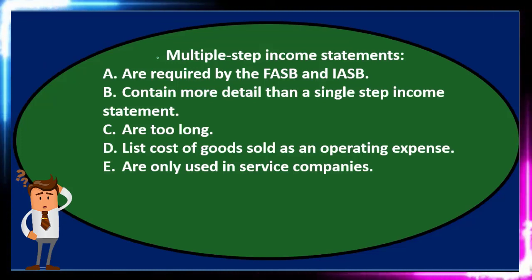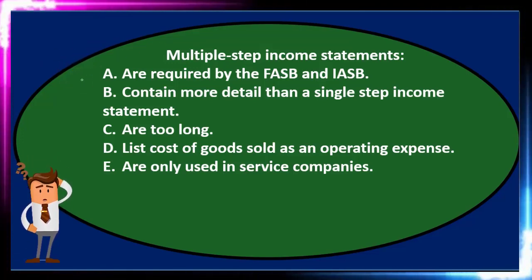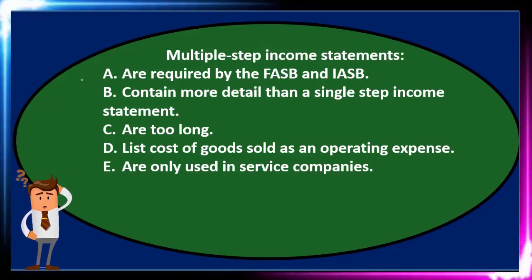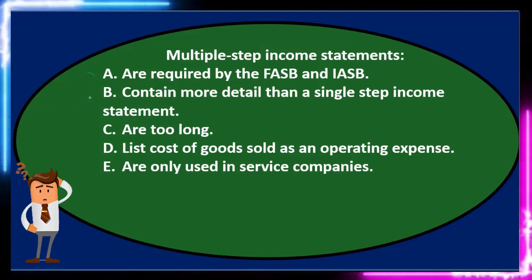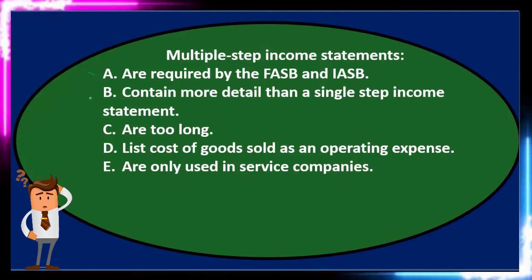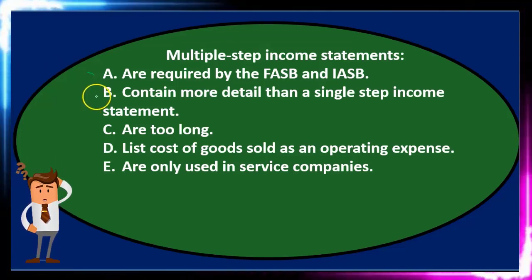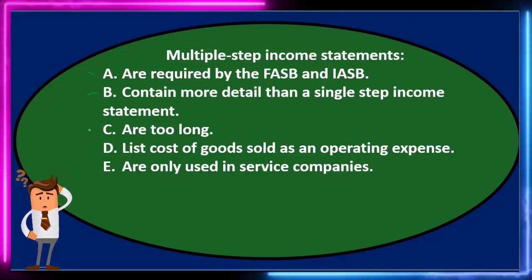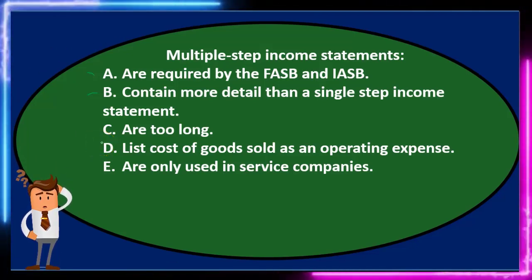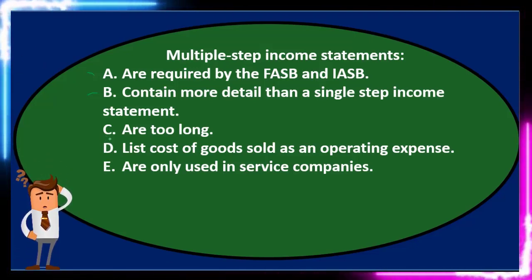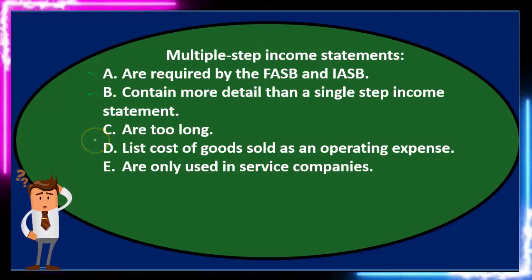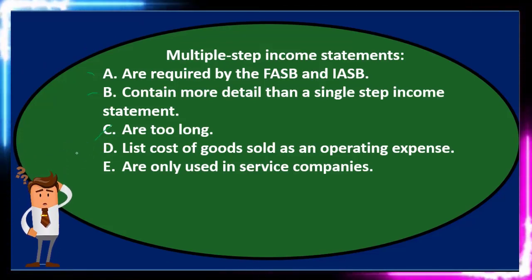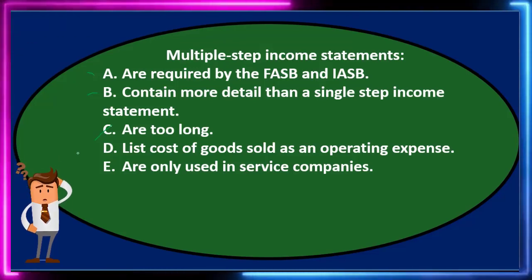Going through the options: A) required by FASB and IASB — these are regulatory bodies and we might not know that for certain, so we'll keep it for now. B) contain more detail than a single step income statement — that seems reasonable because there are more steps, so it appears true. C) are too long — that's an opinion and subjective; some people prefer a single step for the bottom line, others want more information. We remove opinionated statements.